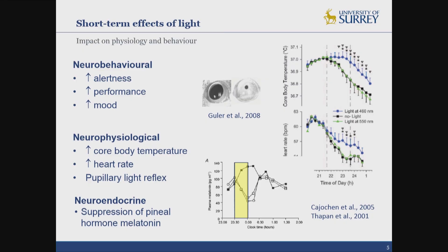In the short term, light can affect both our physiology and our behaviour. It is known that light can directly boost our alertness. It can also influence our performance — both cognitive performance and also physical performance — and light also can affect our mood.